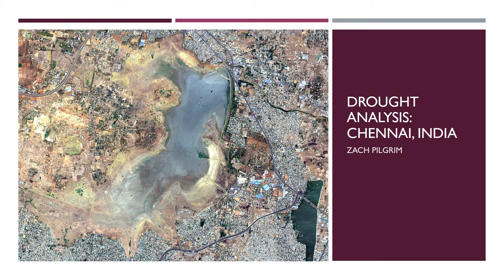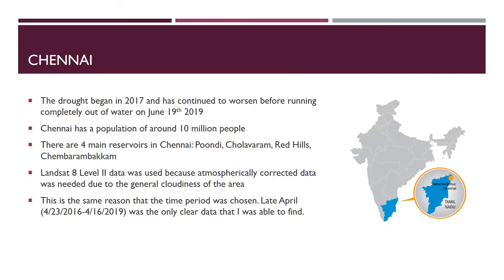Hello, my name is Zach Pilgrim. My project is on drought analysis in Chennai, India. Chennai is the capital of the southernmost state in India. The drought I'm going to be analyzing started in 2017 from lower than normal amounts of precipitation during the 2016 monsoon season, and each year following has had lower and lower amounts of precipitation. I had to use Landsat 8 level 2 data, and the dates I'm using are both from late April — one in 2016 and one in 2019.